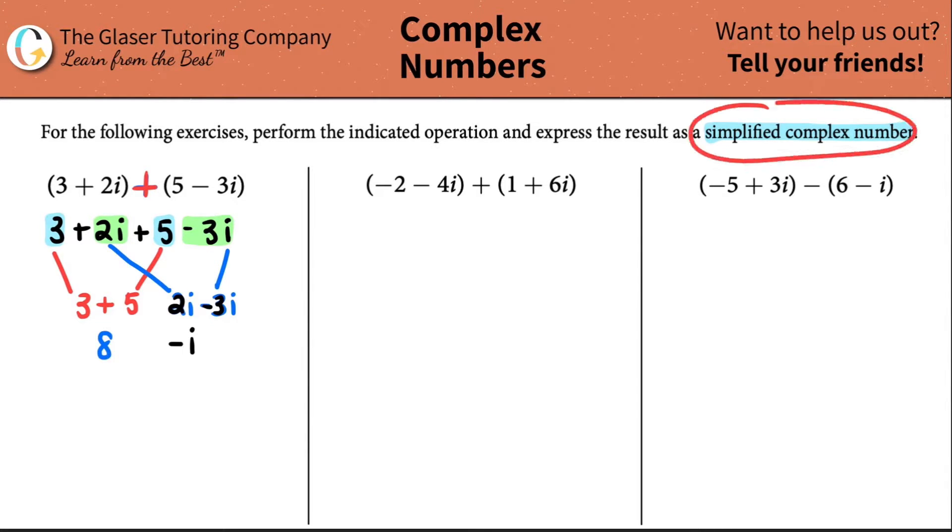Now, a simplified complex number basically states that we need all of our real numbers in the front and then our imaginary numbers in the back. And the imaginary numbers are the ones that are hooked up with that i value. So all the numbers that are just numbers are real; all the other ones that are hooked up with an i are imaginary. So now if I just need to put these two together, it would just be 8 minus i, and that's the final answer.